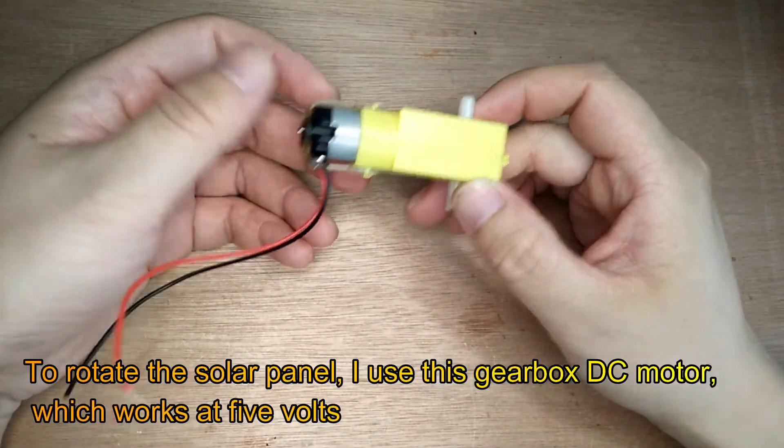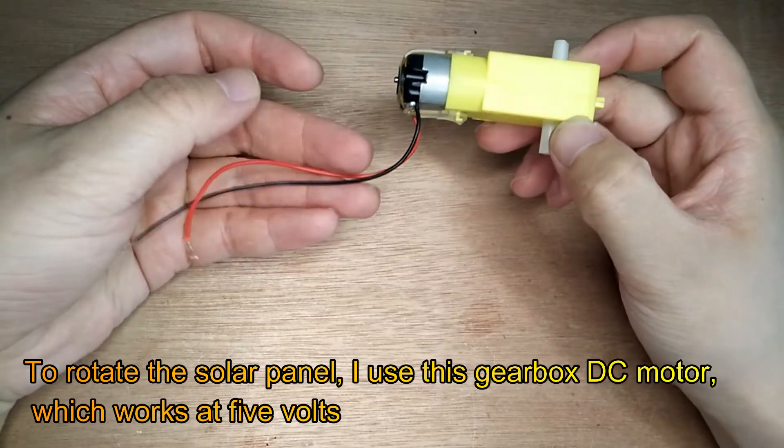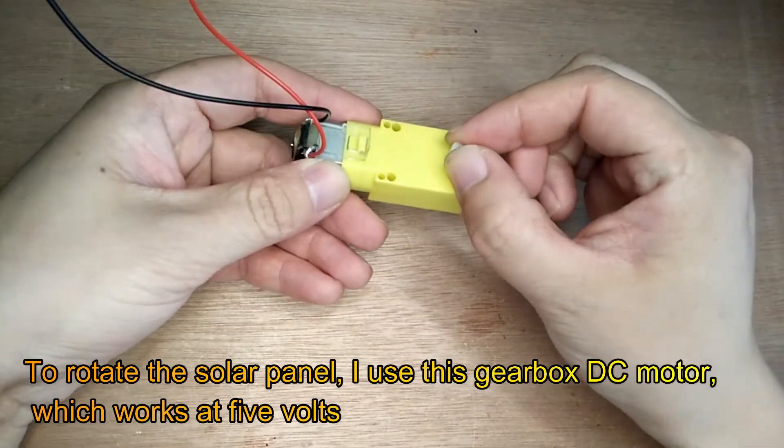To rotate the solar panel, I use a gearbox DC motor, which works at 5 volts.